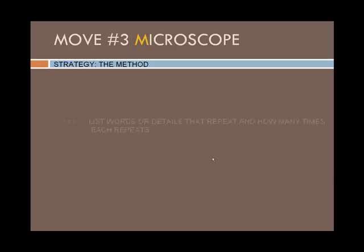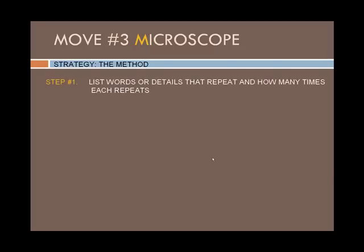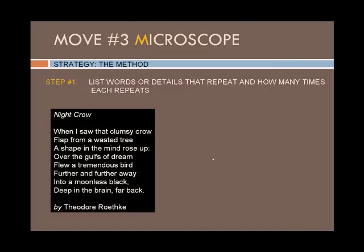The first step of the method is to look for details or words that repeat and say how many times each detail is repeated. This time let's look at a poem by Theodore Roethke entitled 'Night Crow.' Night Crow: when I saw that clumsy crow flap from a wasted tree, a shape in the mind rose up over the gulfs of dream, flew a tremendous bird further and further away into a moonless black, deep in the brain, far back.